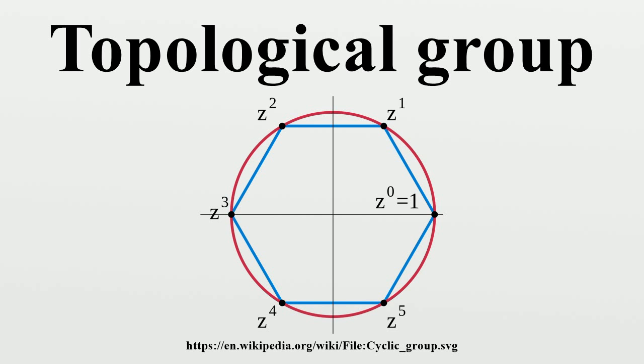If H is a subgroup of G, then the closure of H is also a subgroup. Likewise, if H is a normal subgroup, the closure of H is normal.